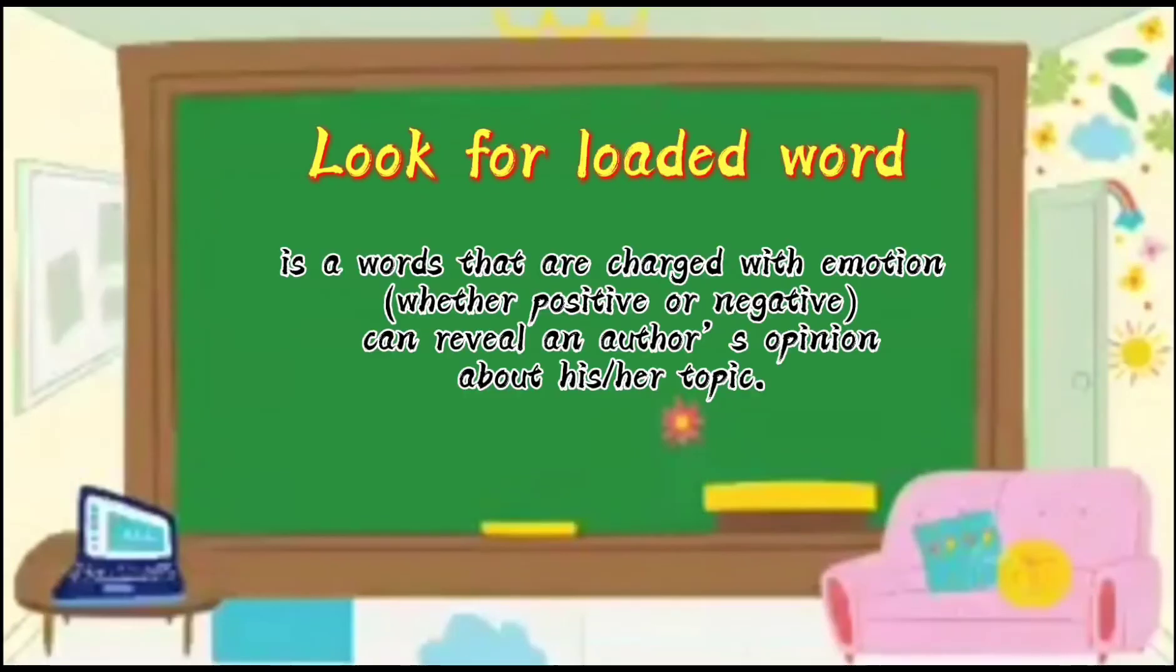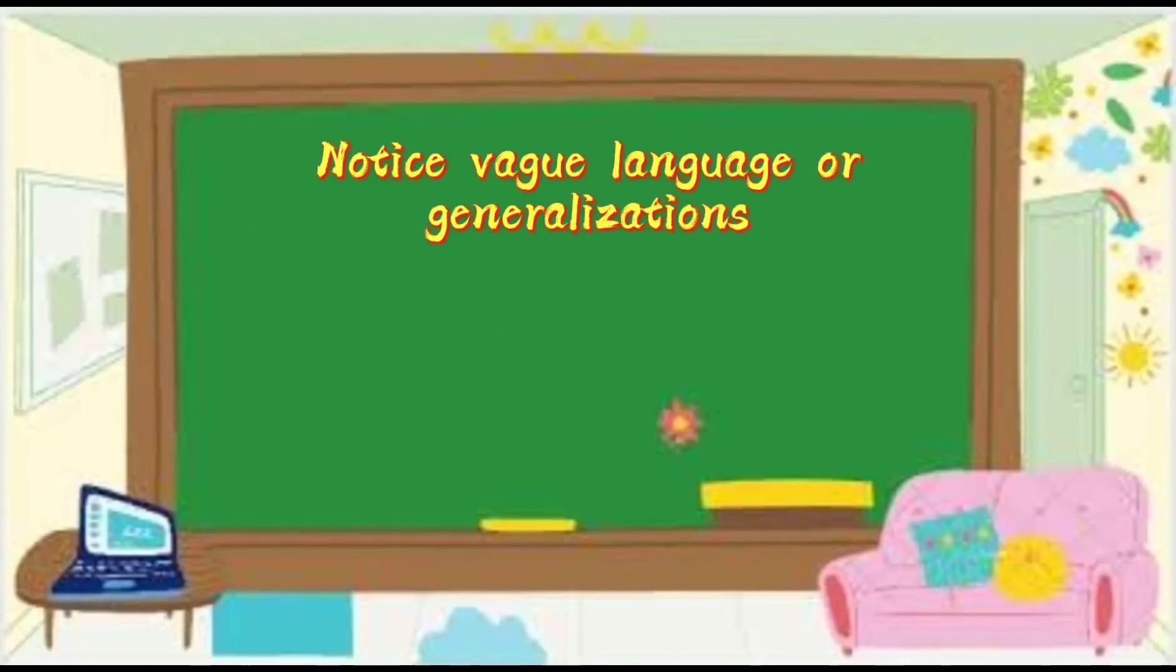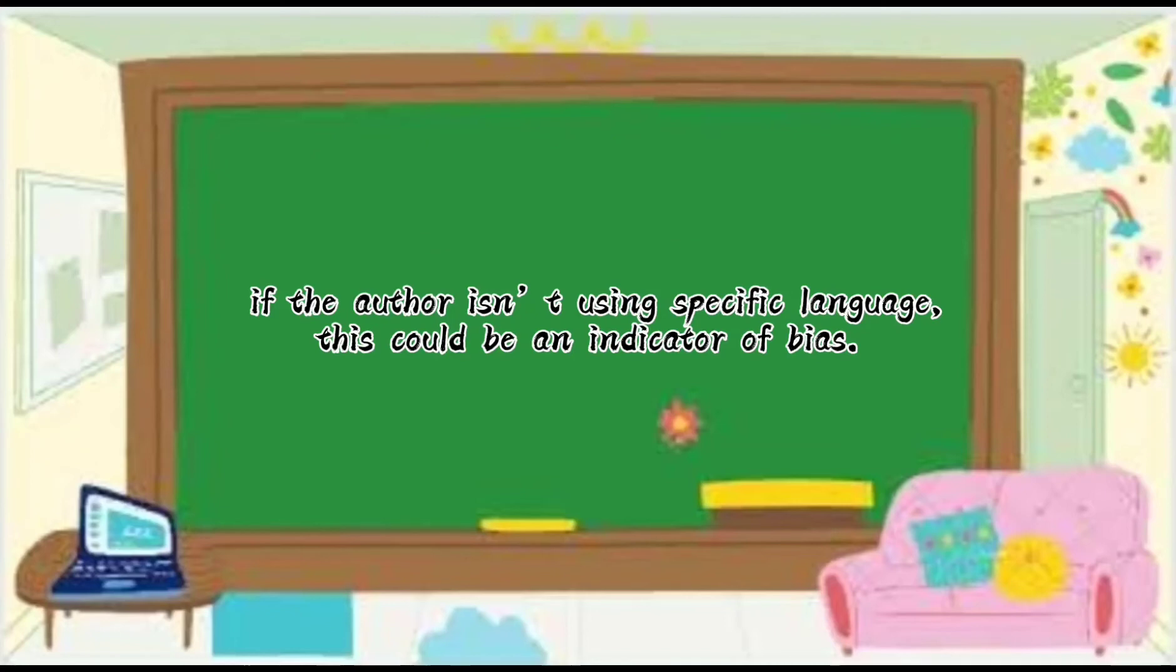So there are different ways to recognize bias in a text. First is look for loaded words. So words that are charged with emotion, whether positive or negative, can reveal an author's opinion about his or her topic. Second is watch out for stereotypes. If the author labels an entire group, the writing is probably biased. Third is notice vague language. So vague means unclear, not specific. So if the author isn't using specific language, this could be an indicator of bias.